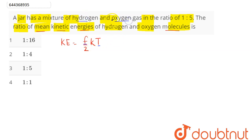that hydrogen and oxygen gas both are diatomic, with f = 5 for both hydrogen and oxygen. Therefore, the kinetic energy for